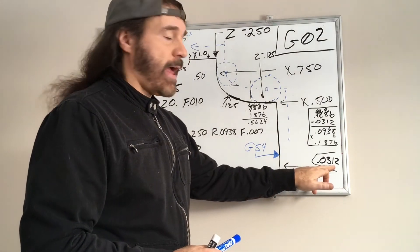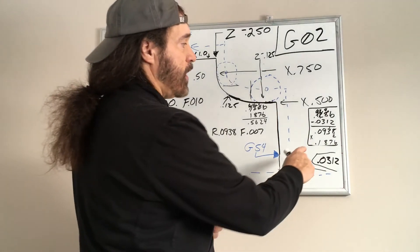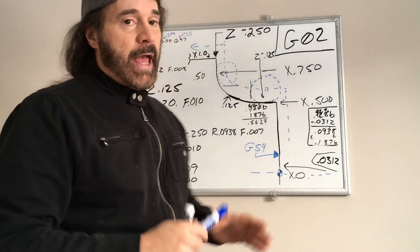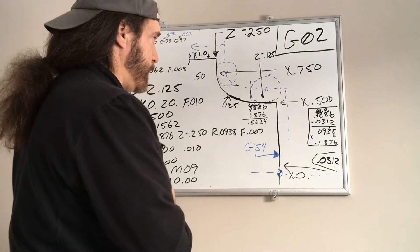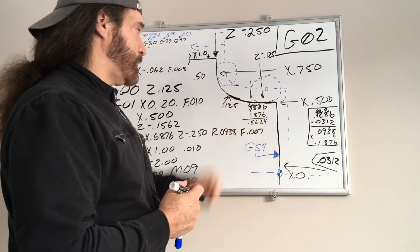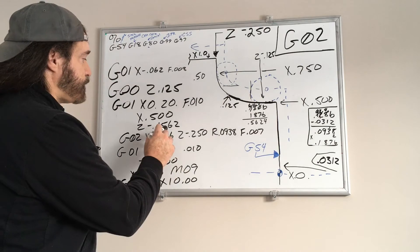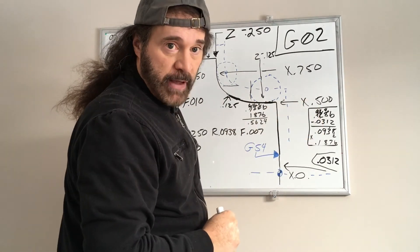Subtract that, which is the radius of the tool tip, and we come up with point zero nine three eight. That becomes our new radius value as far as machining this. So to write that out, you're going to take your X point five.